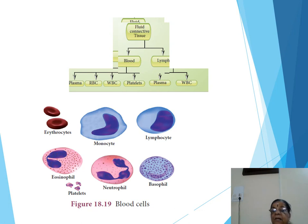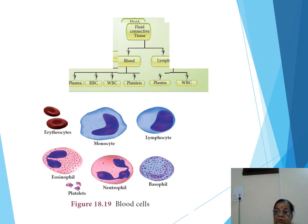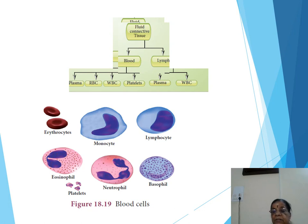Blood plasma also circulates enzymes secreted by digestive glands (salivary gland, stomach gastric gland, liver bile juice, pancreas, small intestine), and hormones secreted by endocrine glands.